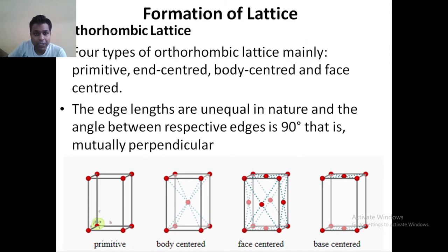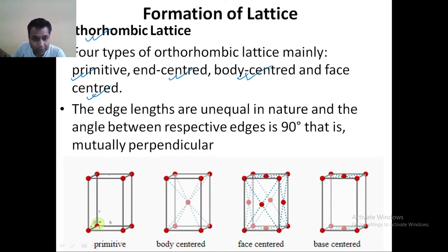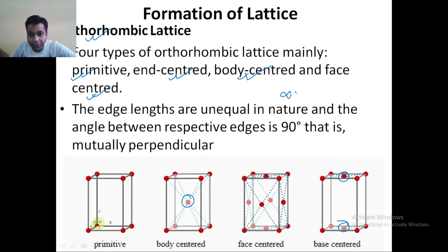The next part is your orthorhombic lattice. In the orthorhombic lattice, we are having all four types — primitive, end centered, body centered, and face centered. In this case, you have lengths that are unequal in nature, but your alpha is equal to beta is equal to gamma is equal to 90 degrees.